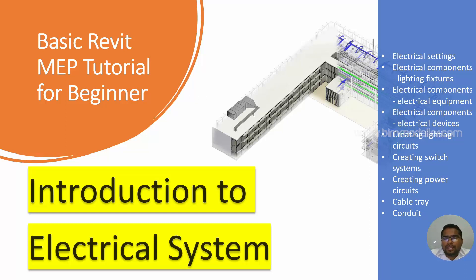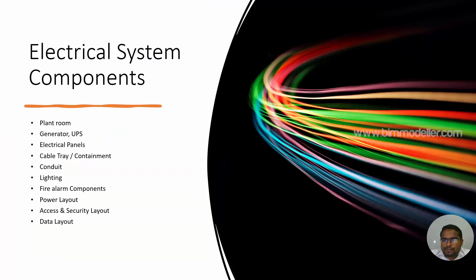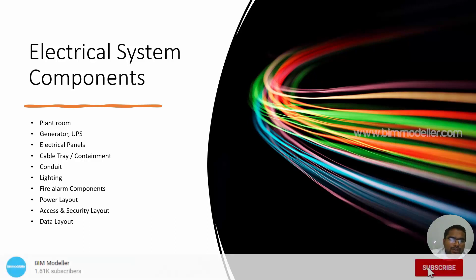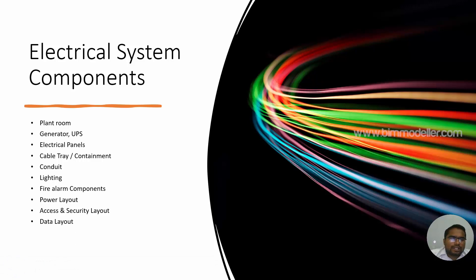This is a basic introduction so you'll be able to understand the electrical components, which include the plant room. You need to understand what a plant room is and what components will be inside it. You can take this as an exercise — search on Google or some other platform to find out what a plant room is.